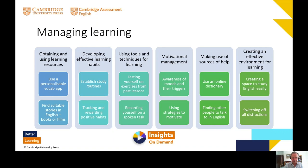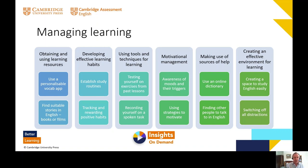The fourth area is motivational management — being aware of your moods and triggers, what makes you feel unmotivated and what motivates you. That self-awareness is critical, and then working out what strategies help you stay engaged when you don't feel like it. Fifth is making use of sources of help — an online dictionary, or finding other people to talk to in English. And sixth is creating an effective environment for learning — creating a space to study English easily and switching off all distractions, yes, including mobile phones.